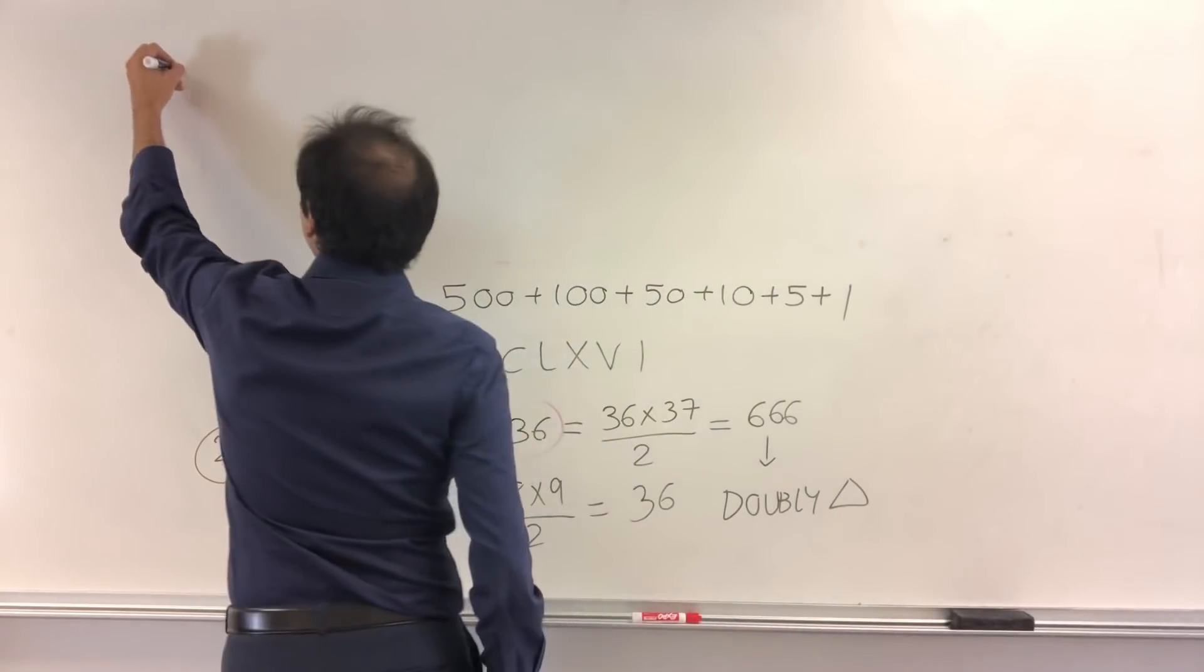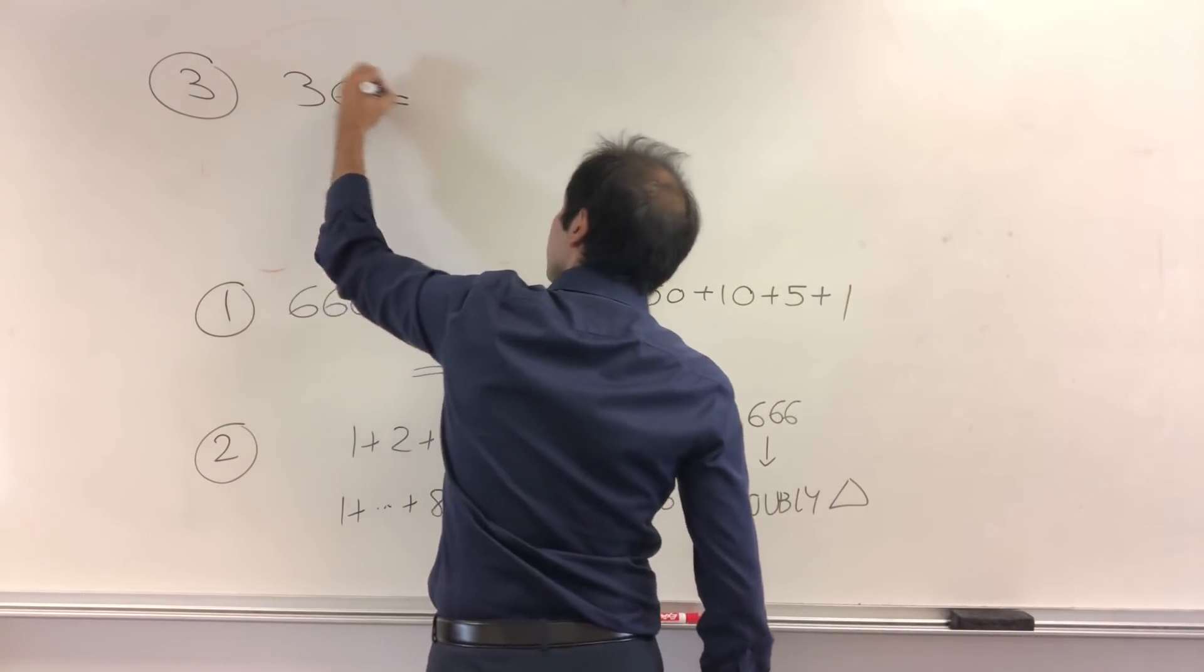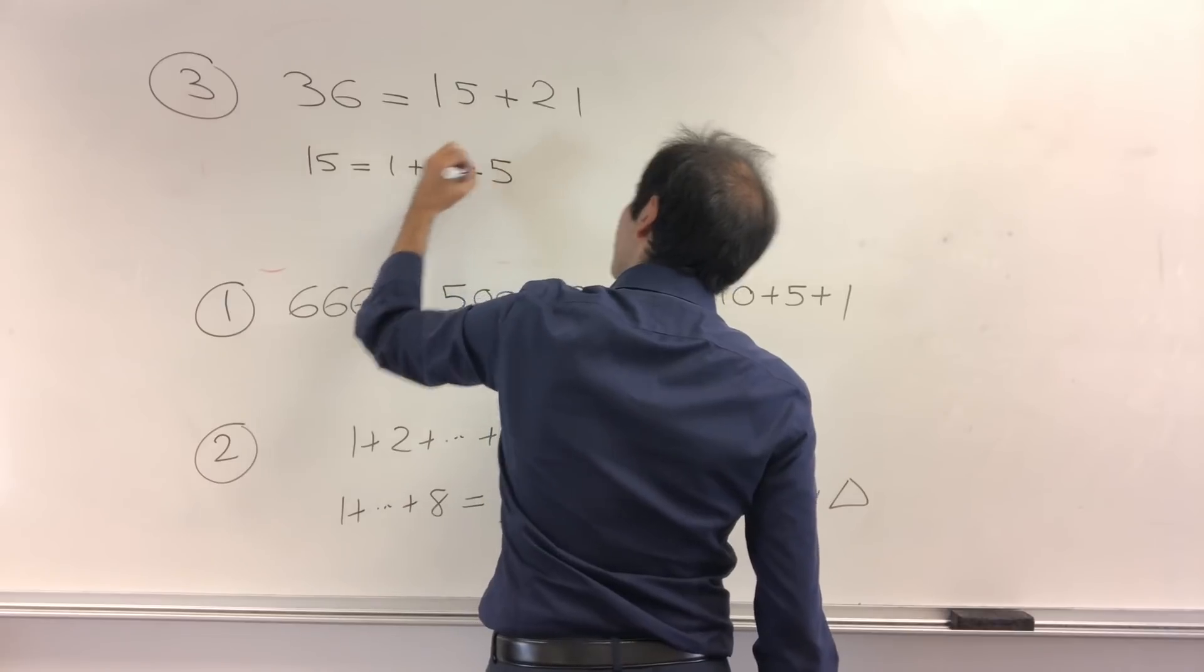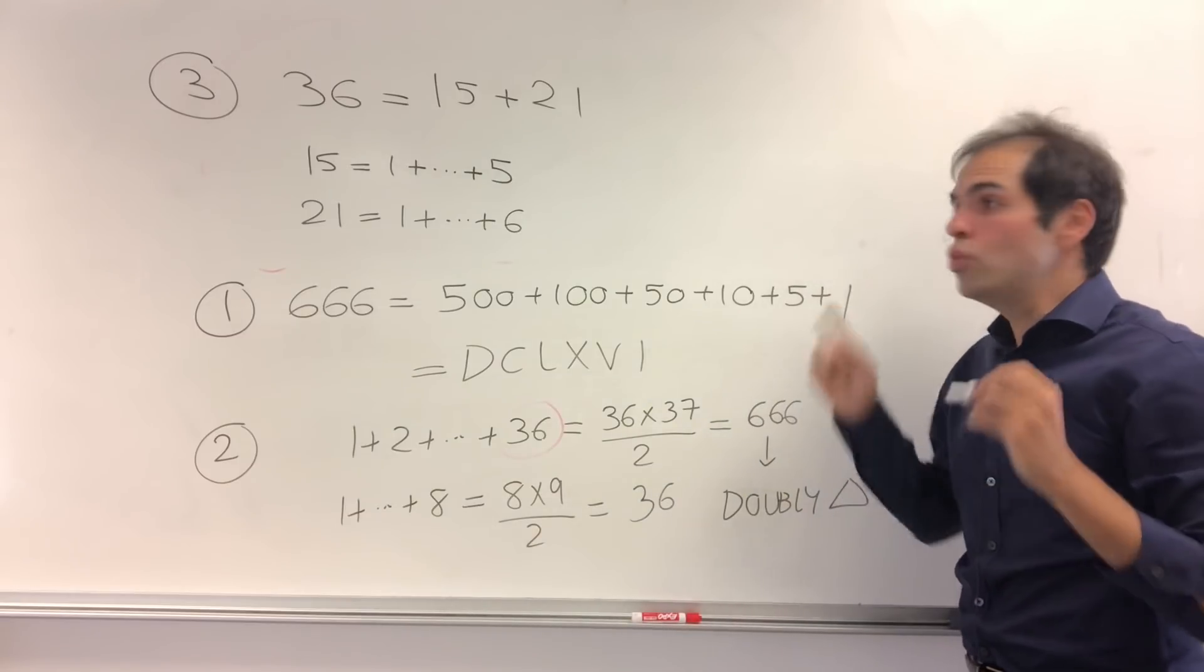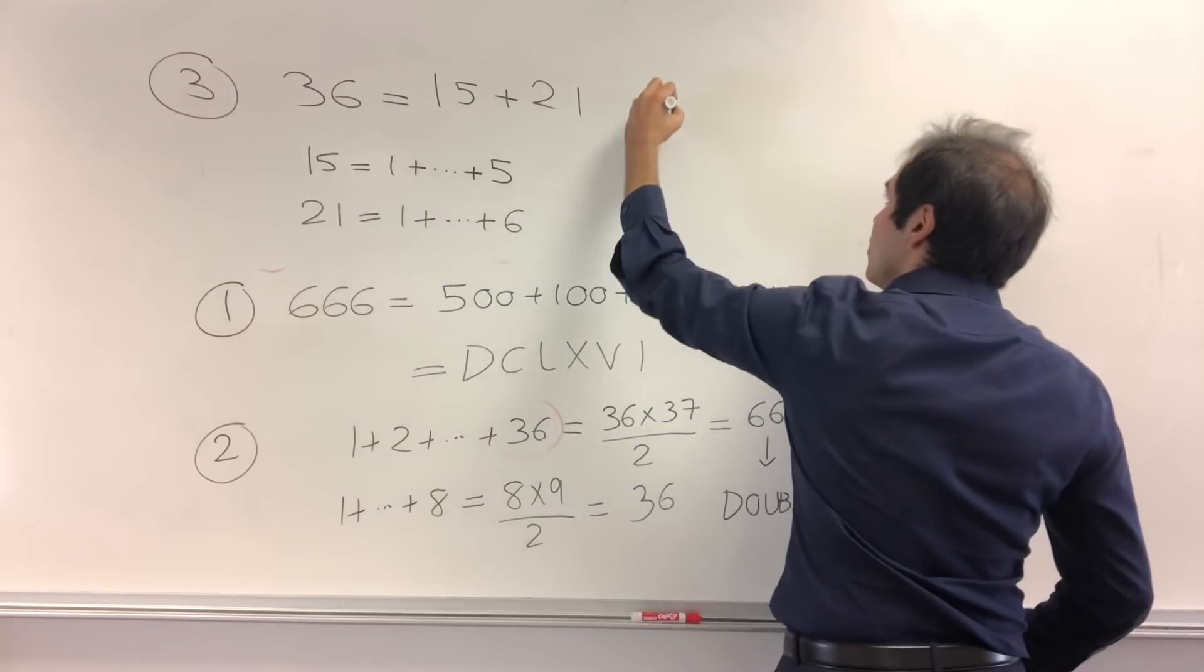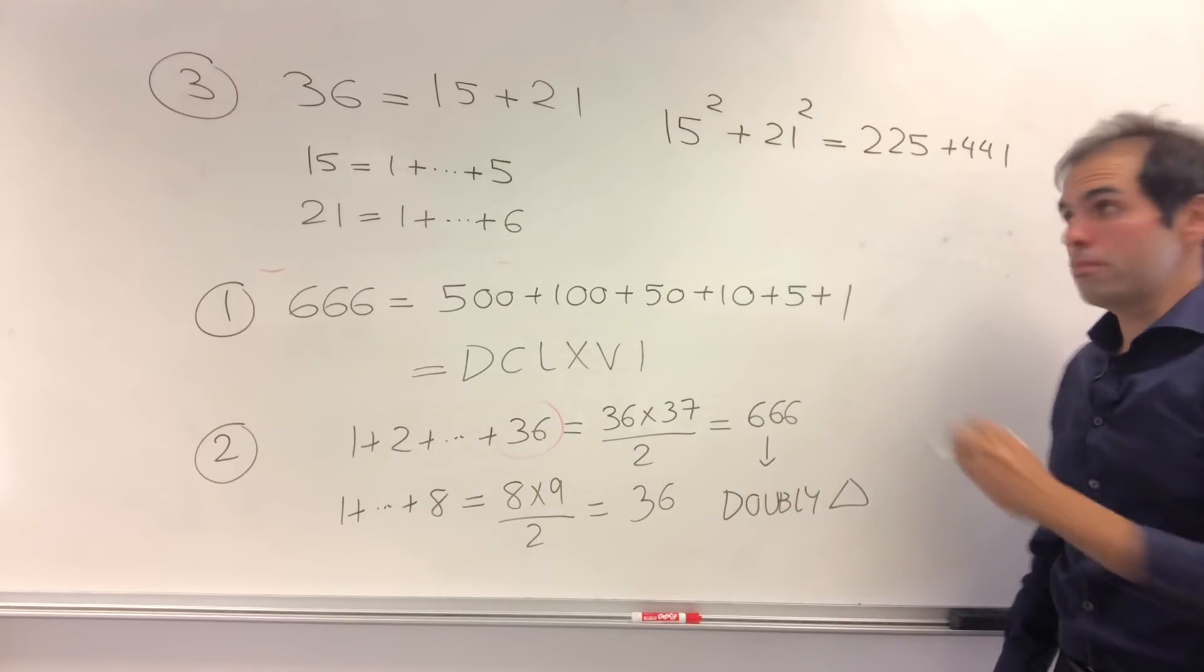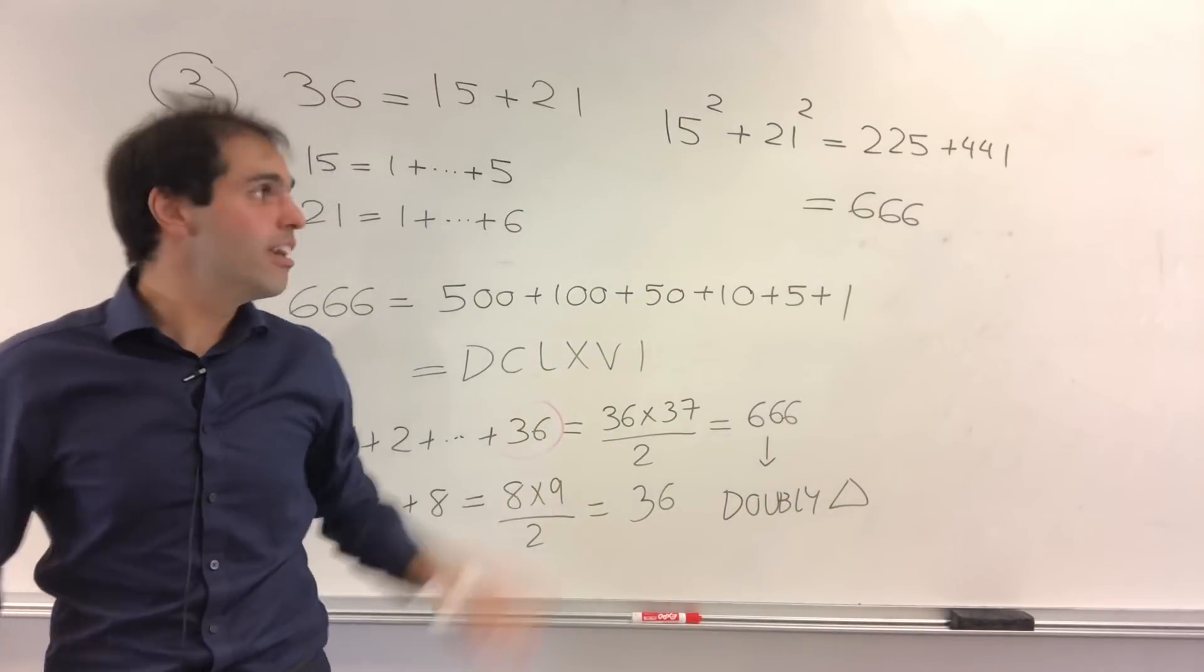Okay. And then, now let's go back to this other property. Because let's look at the number 36 now. It turns out 36 is also the sum of two triangular numbers. It's 15 plus 21, because 15 is the sum from 1 up to 5, and 21, it's the sum from 1 up to 6. But the question is, what does that have to do with 666? Because, what if, for some reason, you take 15 squared plus 21 squared? What you get is, well, 225 plus 441. And if you sum them up, you get 666. Whoa!